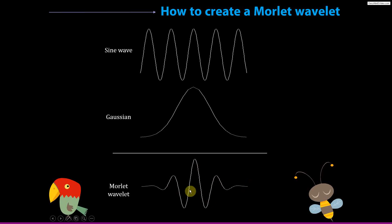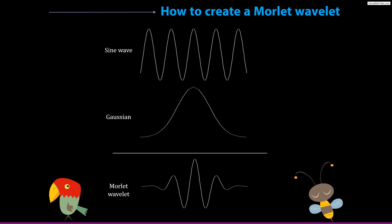Very often I will just use the term wavelet without specifying that it's a Morley wavelet. There are many types of wavelets — you can invent your own. To create a wavelet it just has to be a time series that starts at zero and ends at zero, and it has to integrate to zero, meaning the sum of all points has to be zero — there have to be as many strong positive points as negative points. Morley wavelets happen to be very useful and important in neuroscience data analysis, but be aware that there are many other types of wavelets out there.